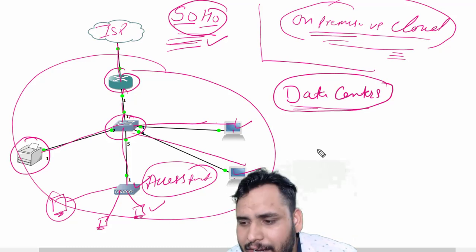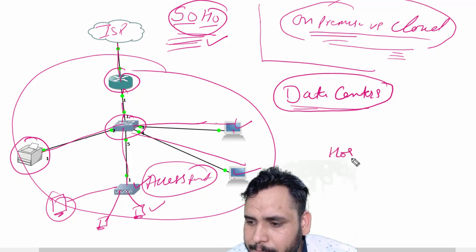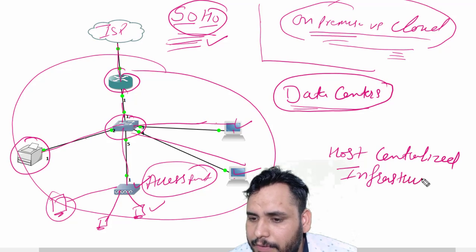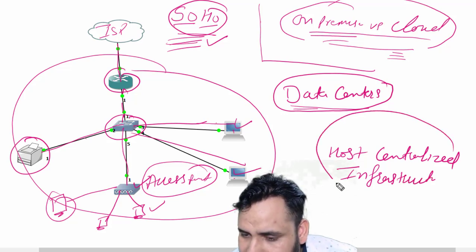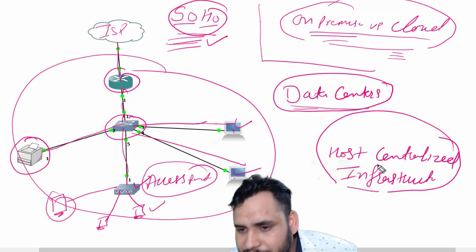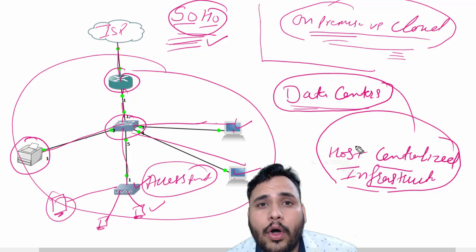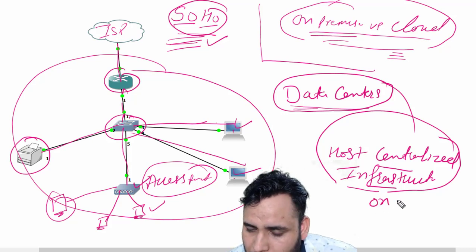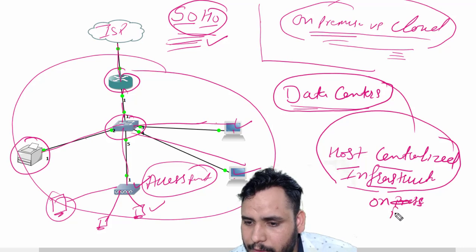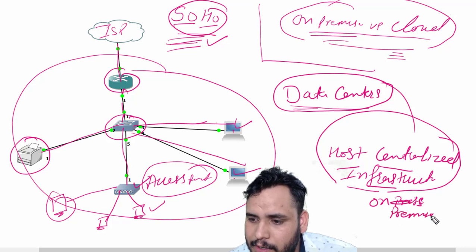Actually data centers traditionally host centralized infrastructure. Like if we talk about our data center, so data center host centralized infrastructure. This centralized infrastructure is known as on-premises.